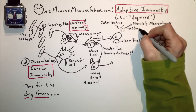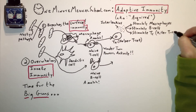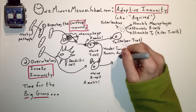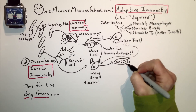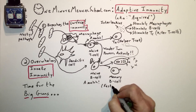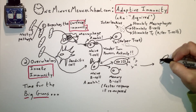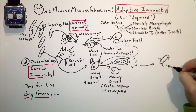These interleukins stimulate macrophages and B cells and also cause the stimulation of killer T cells. Stimulated B cells become plasma cells, which secrete antibodies, and memory B cells for a faster response.